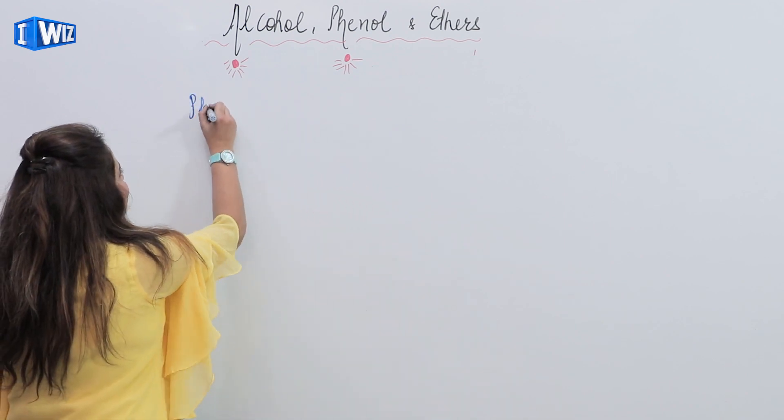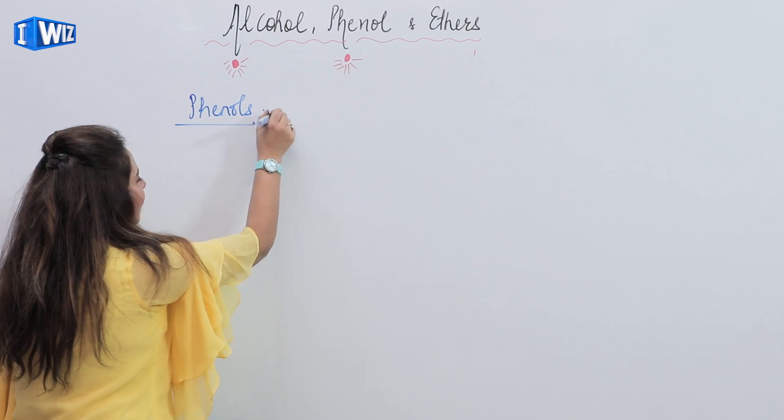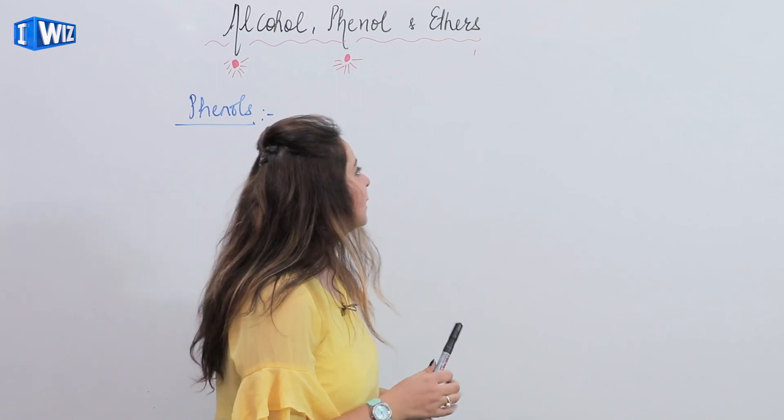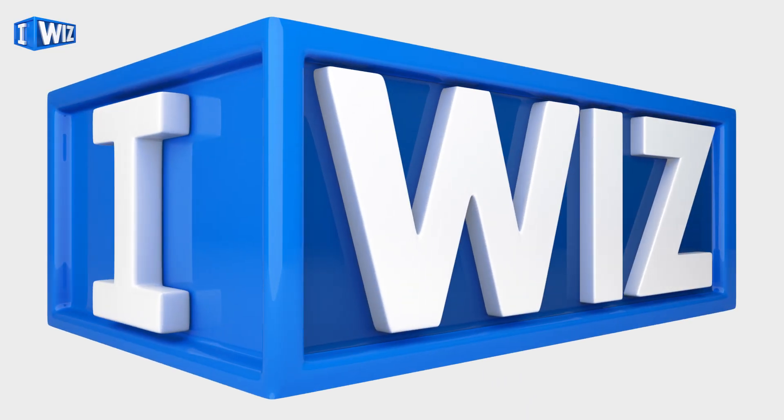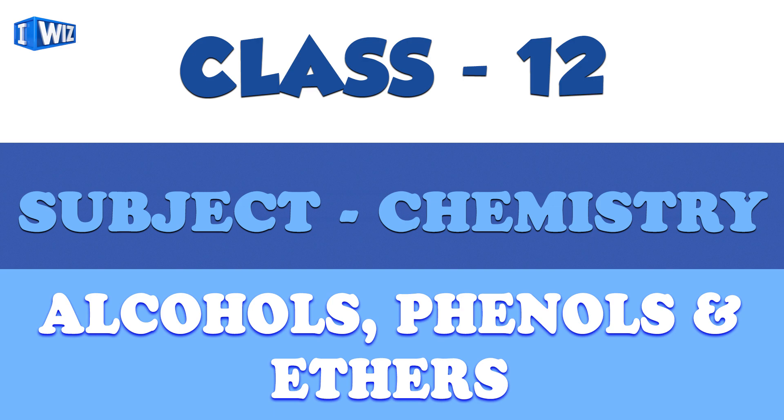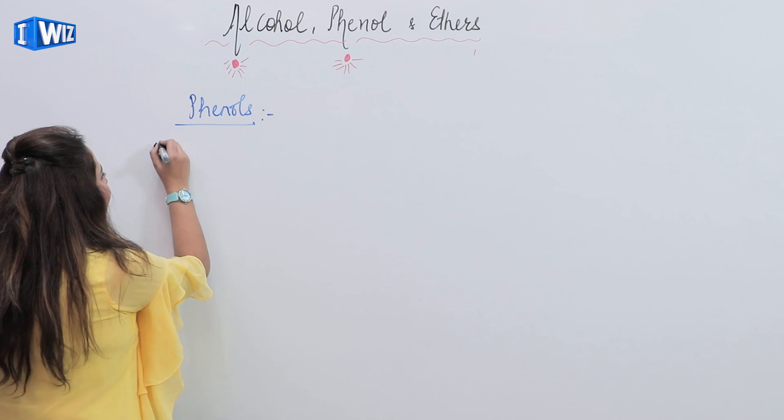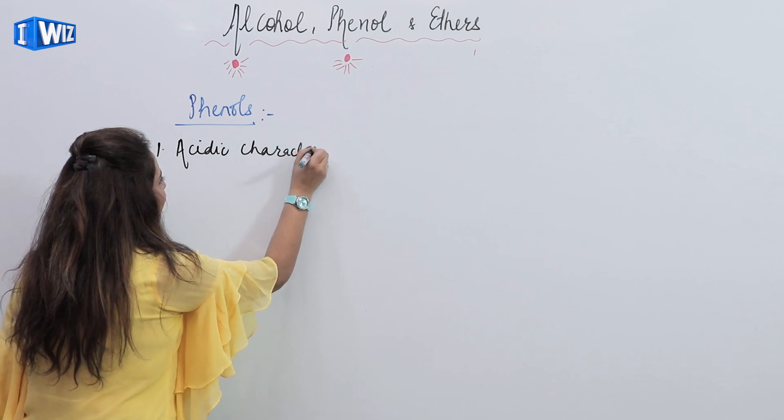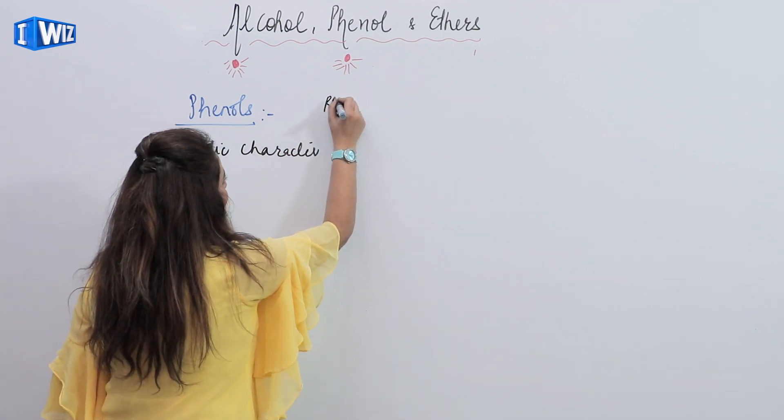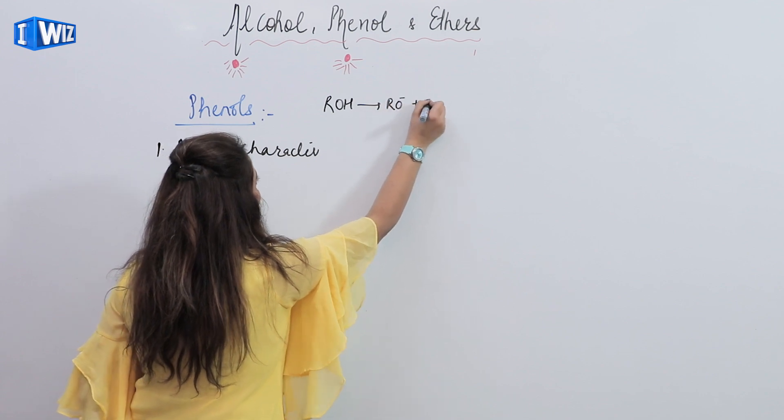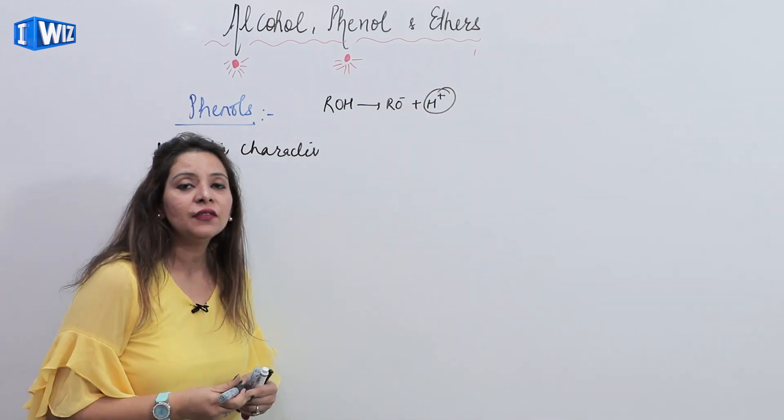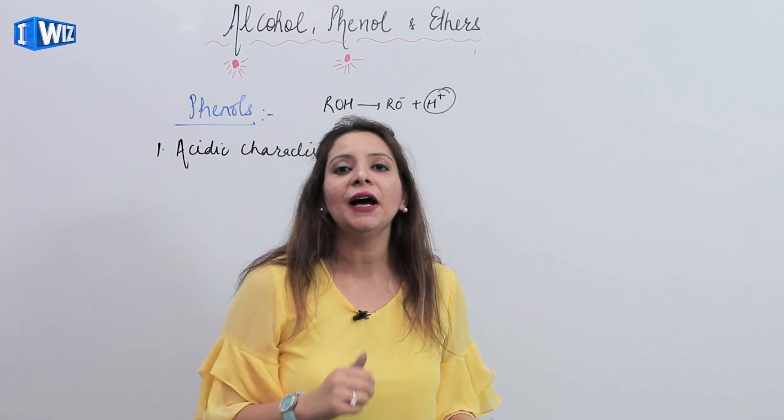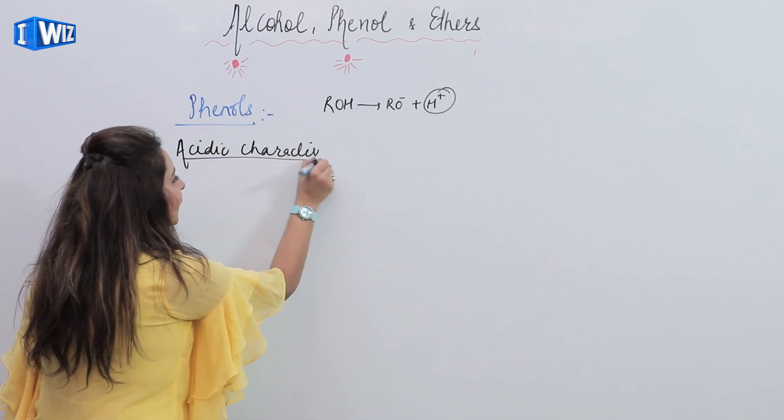After studying the chemical properties of alcohols, studying phenols' chemical properties won't be difficult. You'll do it very easily because it doesn't have very hard and tricky properties. So first, we study the first property of phenols - acidic character of phenols. In alcohols also, we studied acidic character.